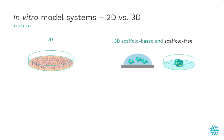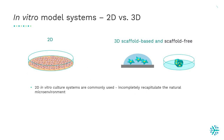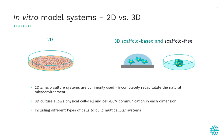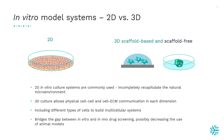There are several in vitro systems available. Traditional 2D systems are commonly used but incompletely recapitulate the natural microenvironment — cells in 2D connect to only one or two other cells in one dimension. 3D models allow physical cell-cell and cell-extracellular matrix communication in every dimension and have become increasingly popular. Cells can be embedded in scaffold-based systems providing an extracellular matrix, or cultured in non-scaffold-based systems such as spheroid cultures, where cells show natural shape, proliferation rates, gene expression, and signaling pathway activation similar to in vivo conditions.